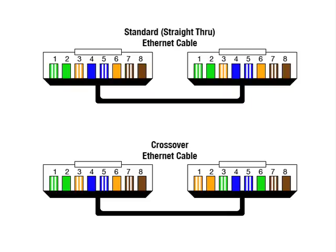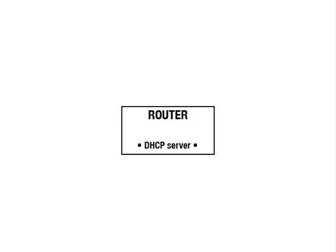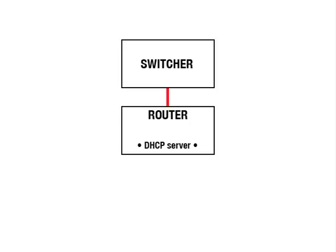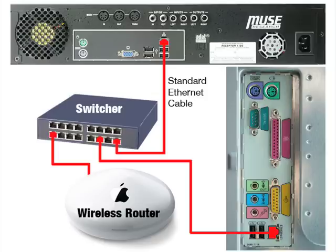So step by step, here's how to set up Receptor with a router and a switcher. Make sure your router is configured as a DHCP server by following the instructions in its manual. If you're using an external switcher, connect it to your router as described in your router manual and make sure that both devices are on. Connect one end of your standard Ethernet cable to Receptor and one end to your switcher. It's essential that you have both ends of this cable connected before proceeding — if you don't, your network won't work properly.